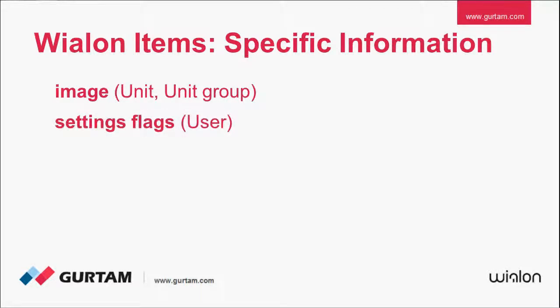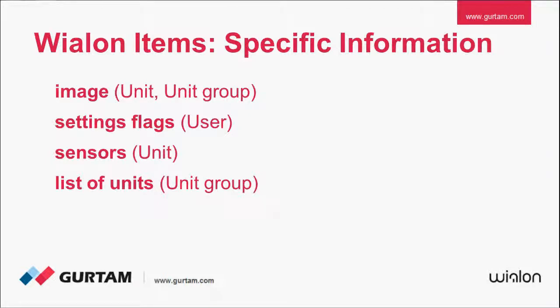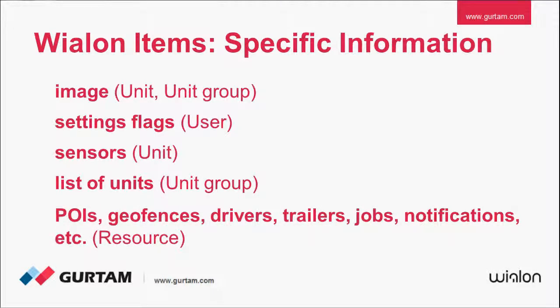Other examples of specific information are as follows. User has settings flags. Unit has sensors. Unit group has a list of its units, and so on. The champion of the amount of specific information is the item resource. Such important data as POIs, geofences, drivers, trailers, jobs, and notifications are all properties of the resource.